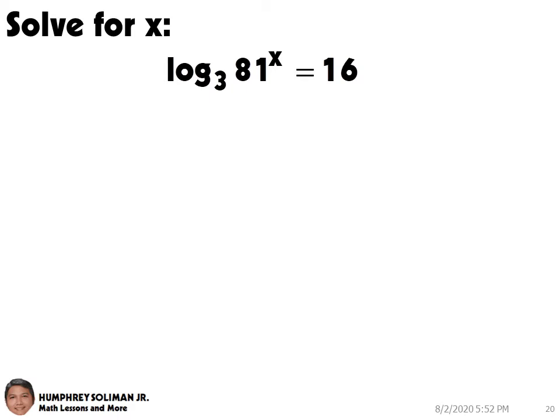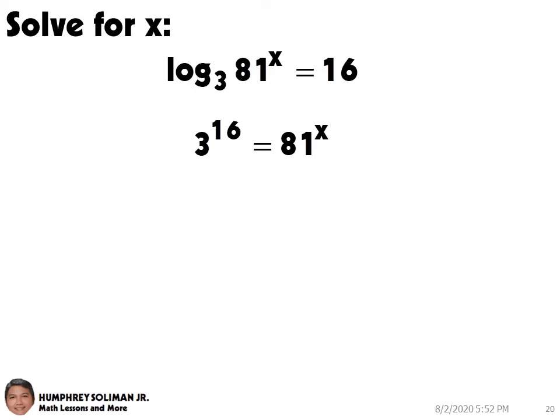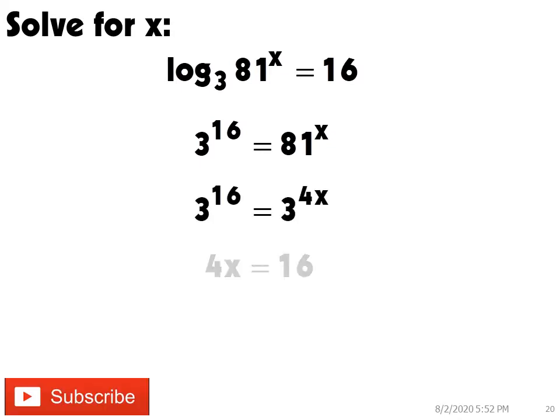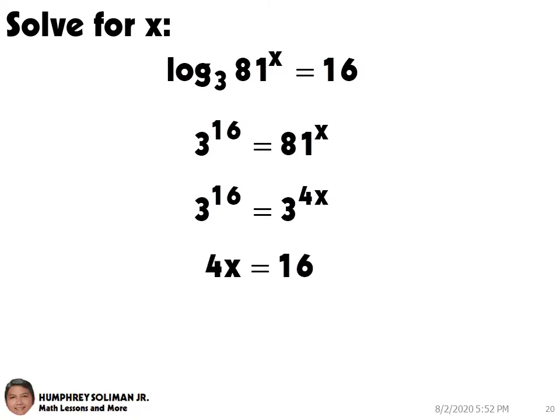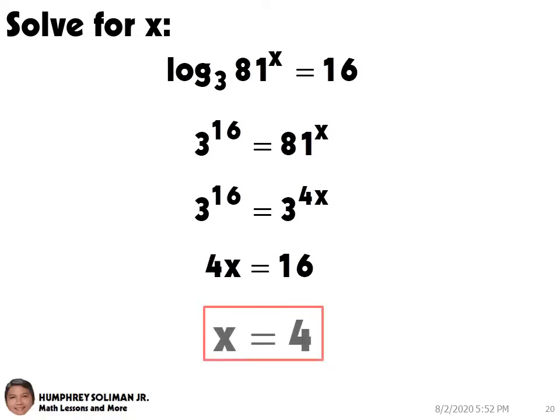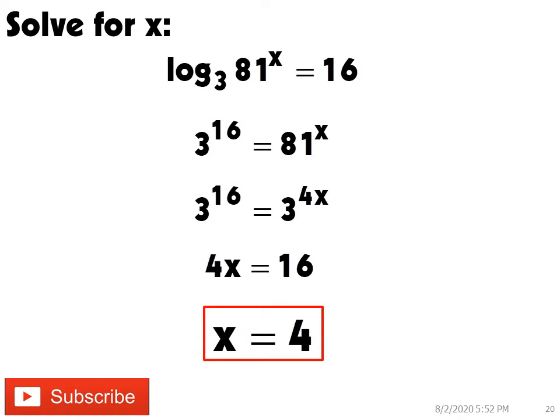In our next example, we need to solve for x. We have log base 3 of 81 raised to x, is equal to 16. We can write this as an exponential equation. And then, rewrite 81 as 3 raised to 4. If the bases of both sides are equal, then the exponents have to be the same. So, 4x is equal to 16. Then, dividing both sides by 4, we can get x equals 4.